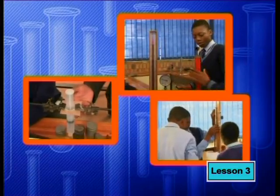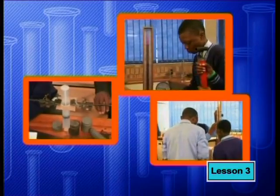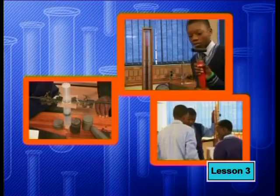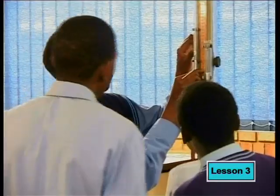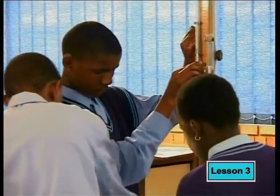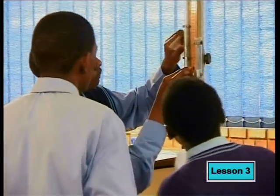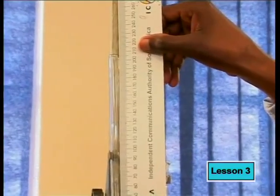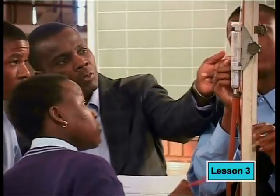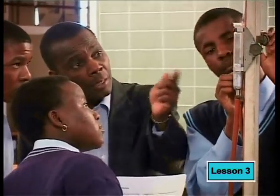Each group of learners has been given a different set of apparatus to investigate the relationship between pressure and volume. Do you think that the different sets of equipment will give similar results? The first group has been given apparatus very similar to the apparatus used by Boyle. A fixed mass of gas has been trapped inside a closed glass tube. This glass tube is connected to a second glass container by a tube filled with mercury. The second glass container is open.